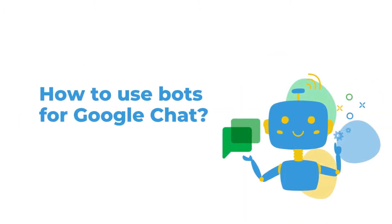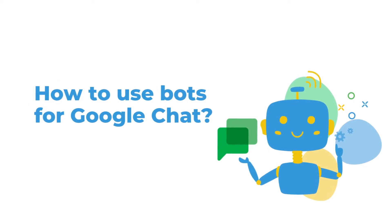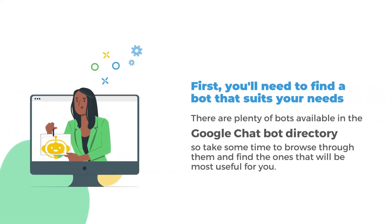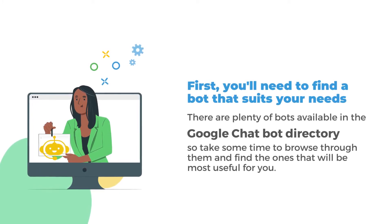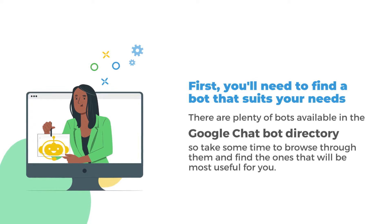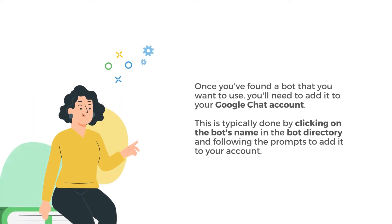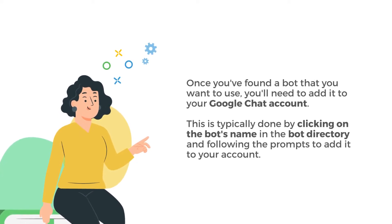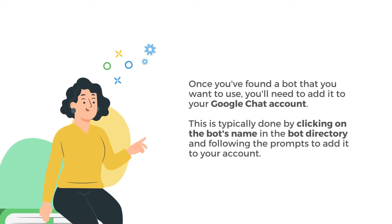How to use bots for Google Chat? Now that we know what bots are, let's discuss how to use them. First, you'll need to find a bot that suits your needs. There are plenty of bots available in the Google Chat bot directory, so take some time to browse through them and find the ones that will be most useful for you. Once you've found a bot that you want to use, you'll need to add it to your Google Chat account. This is typically done by clicking on the bot's name in the bot directory and following the prompts to add it to your account.